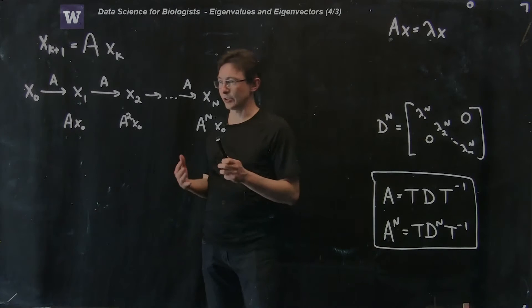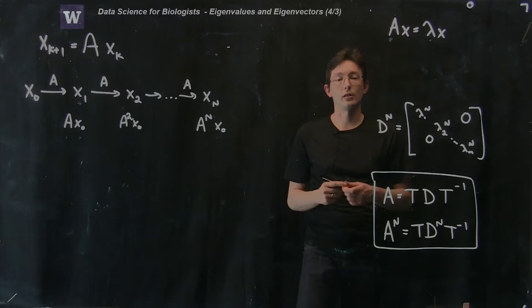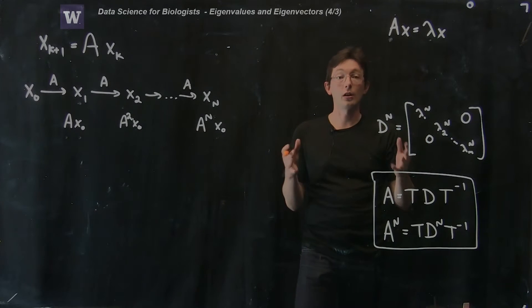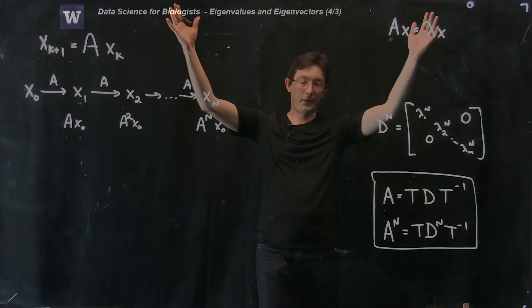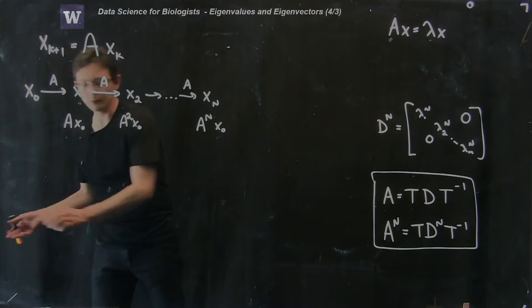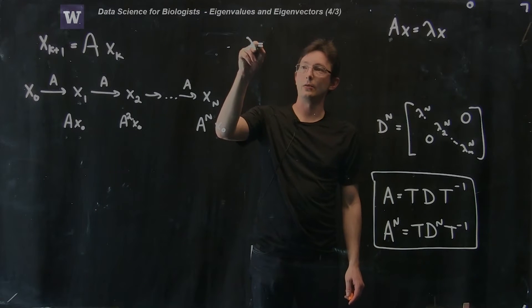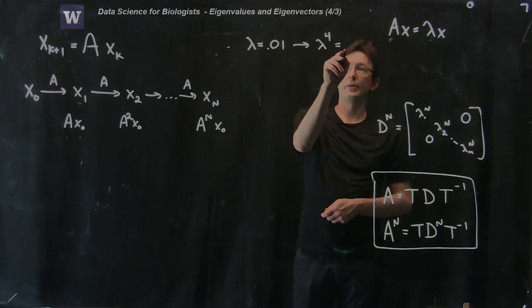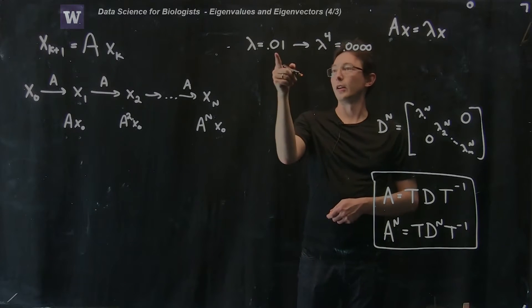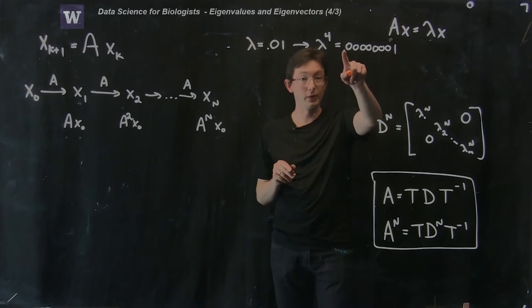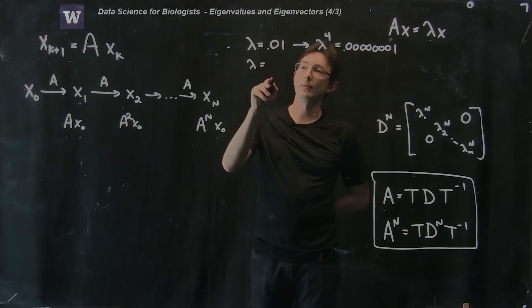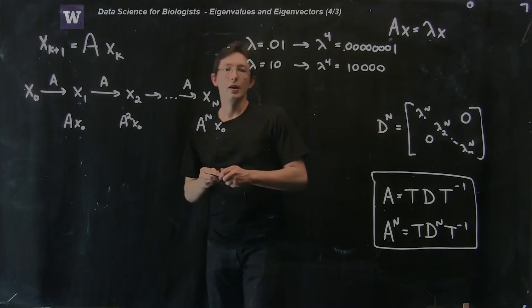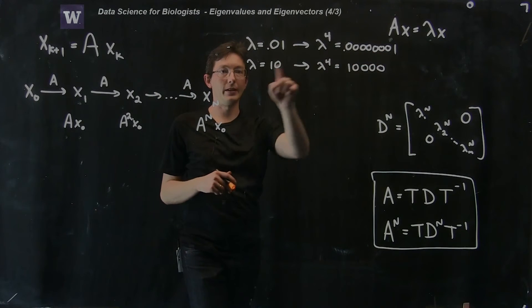The idea is: if all of the eigenvalues are small, then taking a small number to the power n makes it even smaller. But if some eigenvalues are large, taking a large number to a big power n makes them even larger. For example, if lambda equals 0.01, then lambda to the fourth power is 0.00000001 — a really, really small number. But if lambda is 10 and I take lambda to the fourth power, I get 10,000.